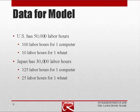Japan has 30,000 labor hours. It takes 125 hours of labor in Japan to build one computer, and 25 labor hours to create one wheat. Notice the U.S. can produce more for two reasons: it has a larger labor force, and its labor force is more productive. This example is not symmetric — Japan is both a smaller and, in effect, a poorer country, because its workers can't produce as much in an hour.